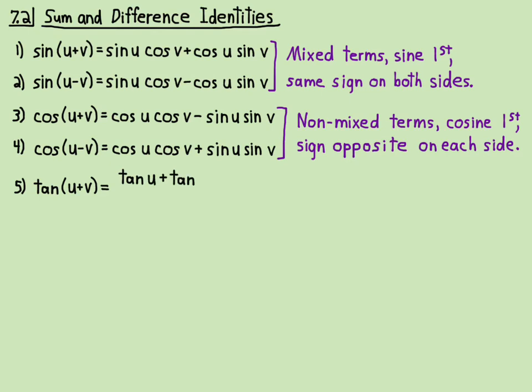Now the tangent ones are very different. The sum identity for tangent: tangent of u plus v equals tangent u plus tangent v, the whole thing over 1 minus tangent u times tangent v. In short, it's the sum of the tangents over 1 minus the product of the tangents. The order is uv, uv, uv on both sides — on the difference one, doing it backwards gives you the wrong sign.